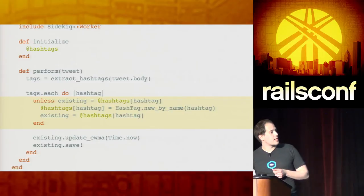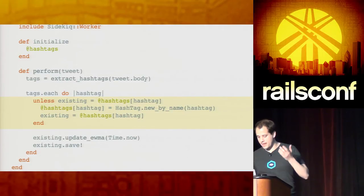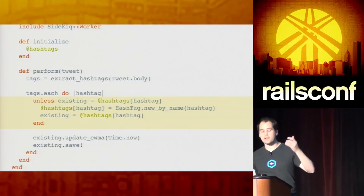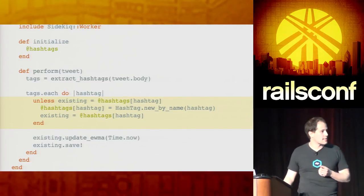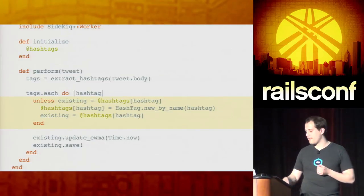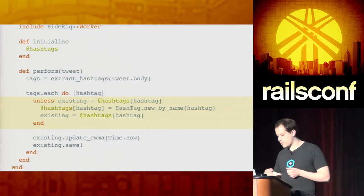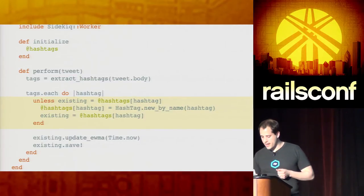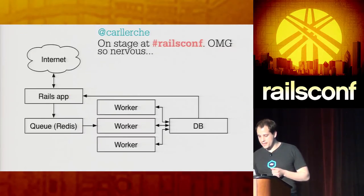A super simple implementation: we basically build an in-memory cache of hashtags in the process, such that every time we get a tweet that comes in, we first check our cache before making a new database call. And we update that and save it back to the database.